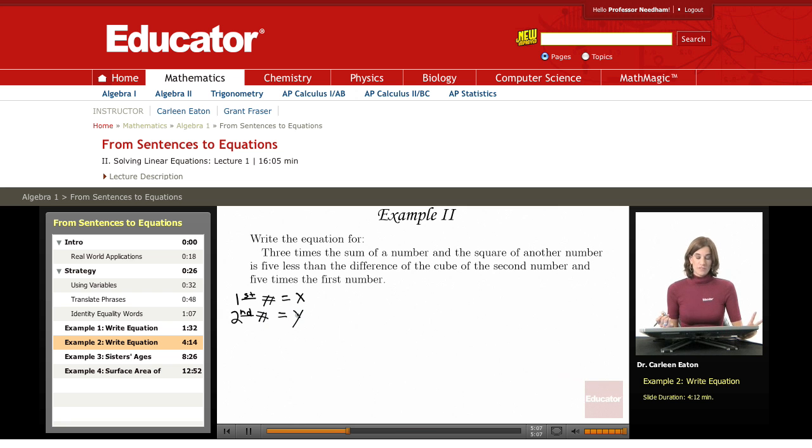So I have my two variables, and now, especially because this is a long equation, I need to figure out where the equal sign goes. Three times the sum of a number and the square of another number is. Is tells me that this first half, this whole long phrase, equals everything that comes after.